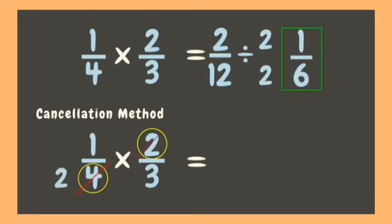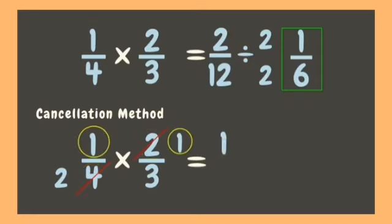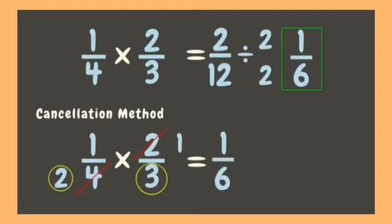Therefore we can divide each of them by two. Four divided by two is two, while two divided by two is one. Can you still see another numerator and denominator that have a common factor? No more. Now we can multiply: one times one is one, two times three is six. Our answer is one-sixth.